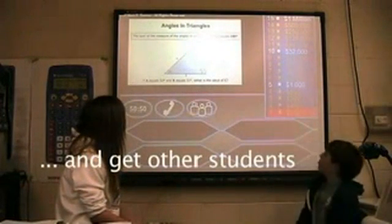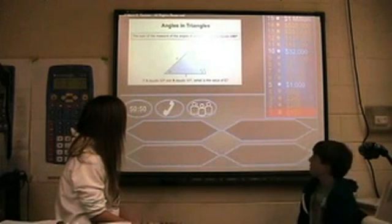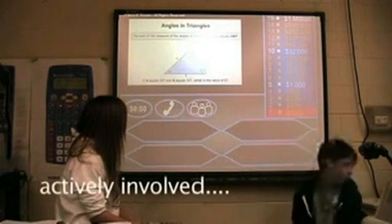The sum of the measure of the angles of a triangle always equals 180. If A equals 50 and B equals 55, what is the value of C?